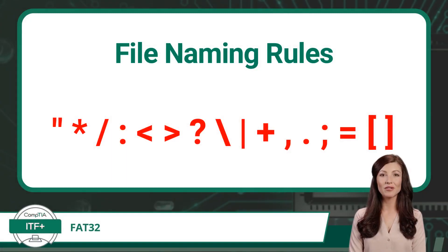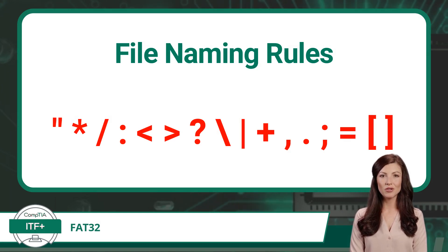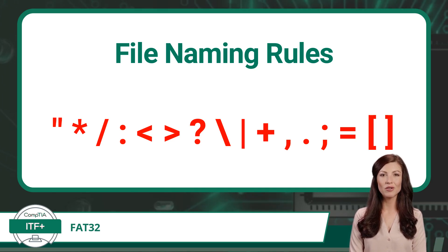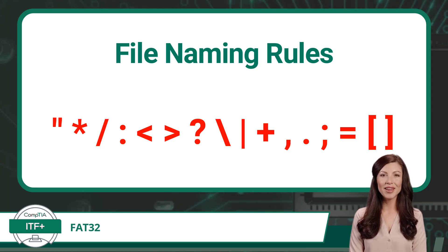Finally, FAT32 follows some very specific naming rules for files and folders. It restricts the use of certain characters like the double quotation mark, asterisk, forward slash, colon, less than and greater than angle brackets, question mark, backslash, and vertical bar or pipe — just like NTFS — but also restricts the plus symbol, commas, periods, semicolons, the equal sign, and square brackets as well.